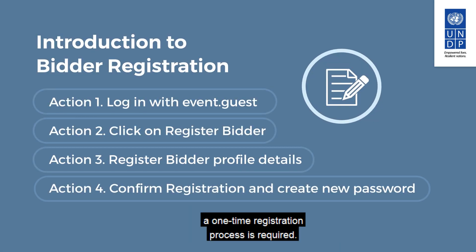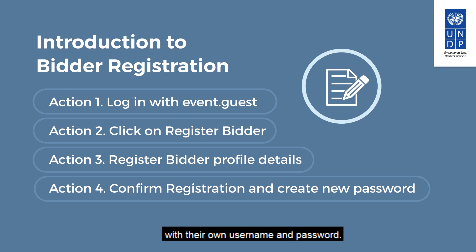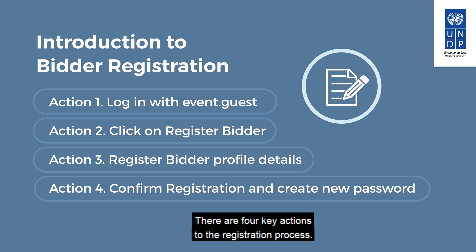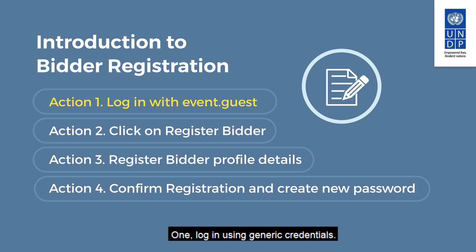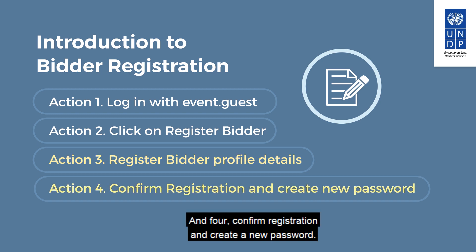The first time a bidder enters eTendering, a one-time registration process is required. Bidders only register once and thereafter enter eTendering with their own username and password. There are four key actions to the registration process: 1. Log in using generic credentials. 2. Click on the Register Bidder link. 3. Register Bidder Profile details. 4. Confirm registration and create a new password.